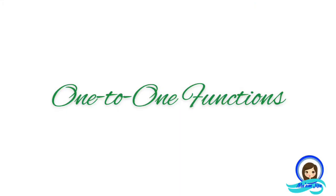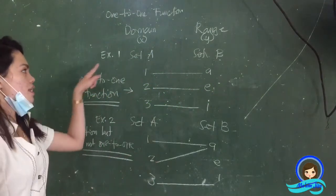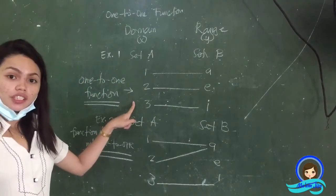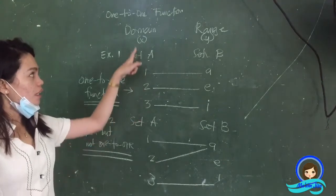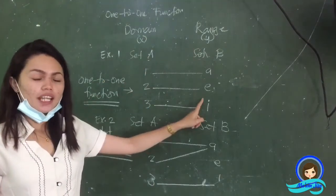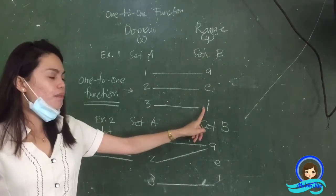Hello everyone, so in this video I'll be discussing one-to-one functions. We have here two examples. Example one is an illustration of a one-to-one function because the elements in the domain are paired to a unique element in the range, and in the same manner, the elements in the range correspond to a unique element in the domain.